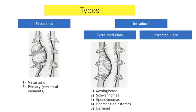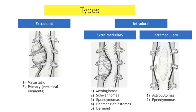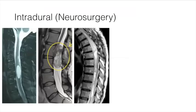This picture shows the space between the dura and the spinal cord. Examples of intradural extramedullary tumors include meningiomas, schwannomas, ependymomas, hemangioblastomas, and dermoid tumors. Intramedullary tumors, within the spinal cord's parenchyma, include astrocytomas and ependymomas. Intradural tumors are managed by neurosurgery, but it's important to have a basic understanding of how they look on imaging.